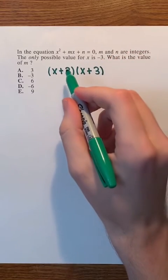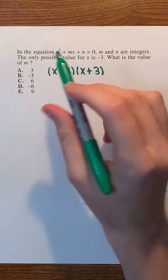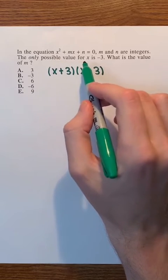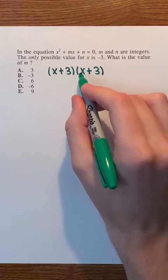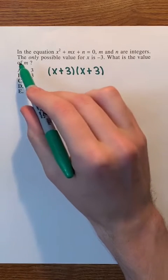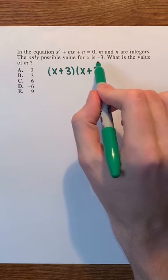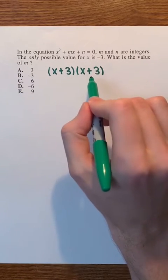Remember that the constants of the factors of a quadratic equation are always going to be opposite the possible values of x whenever the x's in the factors have coefficients of 1. Therefore, because the only possible value for x is -3, the factors have constants of positive 3.